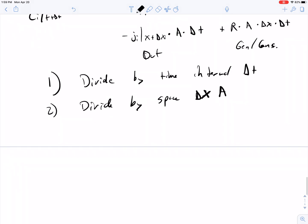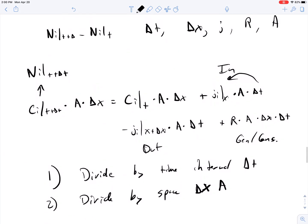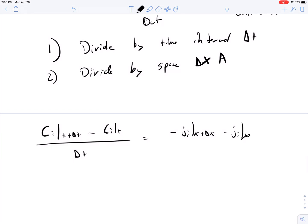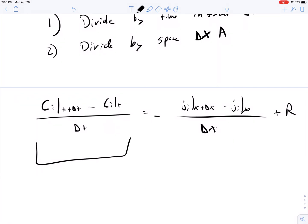So if we remove the concentration at the previous time point to the other side, you end up with C I at time interval delta T in the future minus the value at your previous time point, all divided by delta T. So we're just moving this over, dividing by A delta X, and this is going to be equal to minus J I at X plus delta X minus J I at X, all divided by delta X. The A cancels out, plus the reaction that's taking place there.